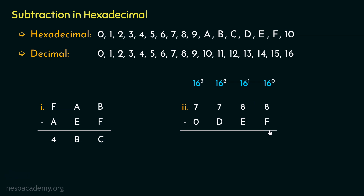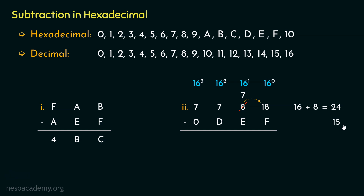In the least significant digit's place, the minuend digit is 8 and the subtrahend digit is F — we are subtracting 15 from 8, so we need to borrow from the 16¹ place, borrowing 10, that is 16. If we borrow 1, we are left with 7 in that place. This unit's minuend becomes 18 in hexadecimal. 16 plus 8 gives us 24 in decimal, and F is 15, so 24 minus 15 gives us 9. The least significant digit in the answer is 9.